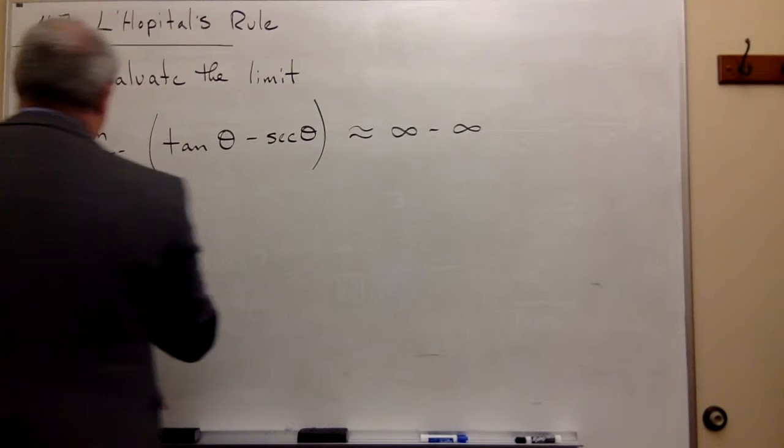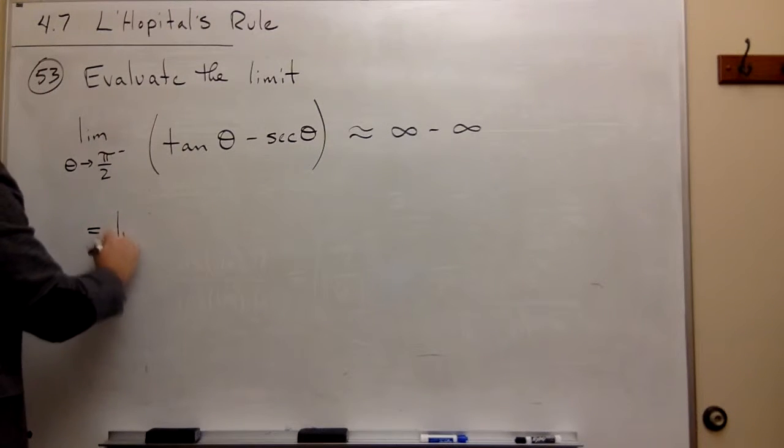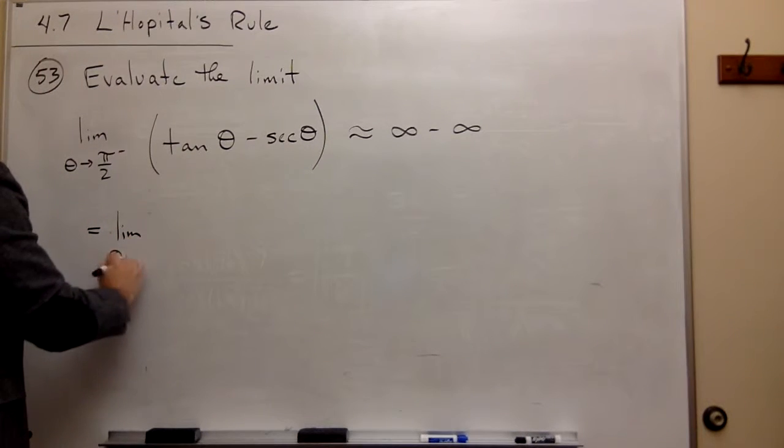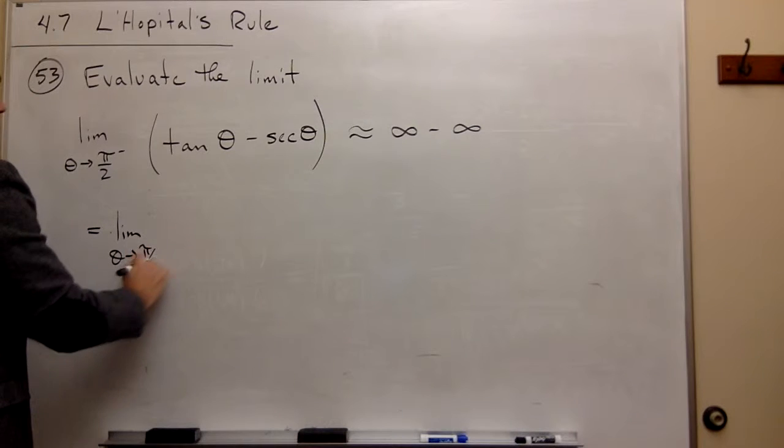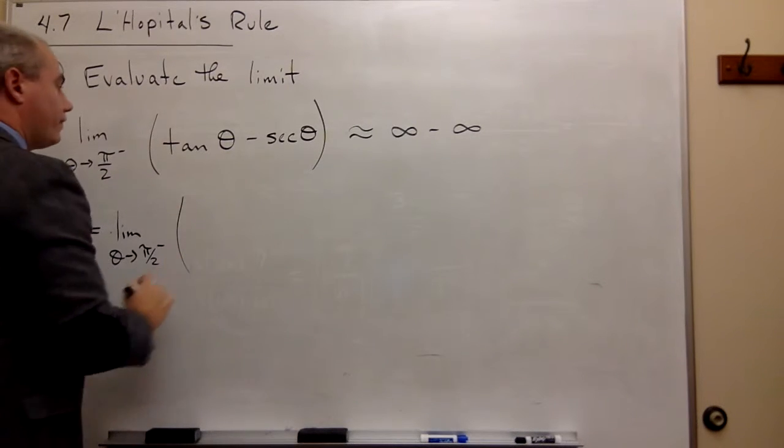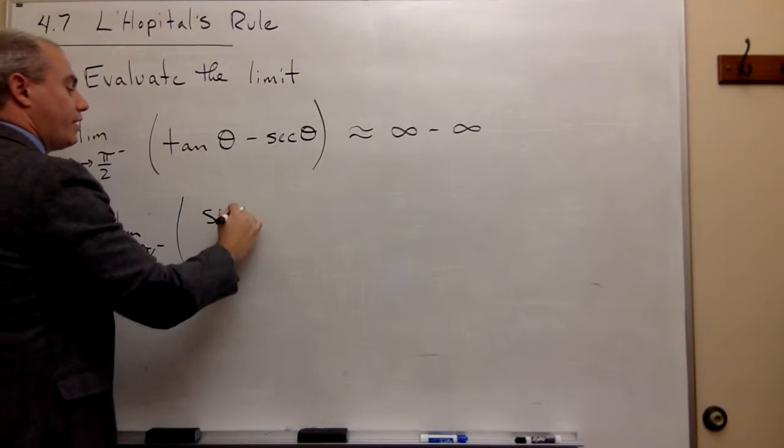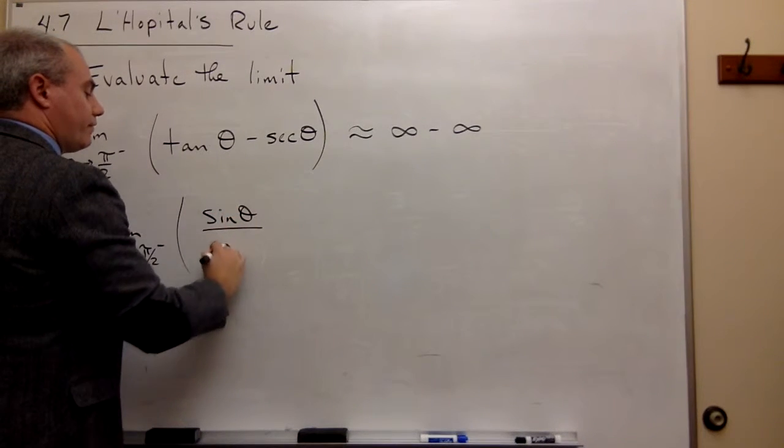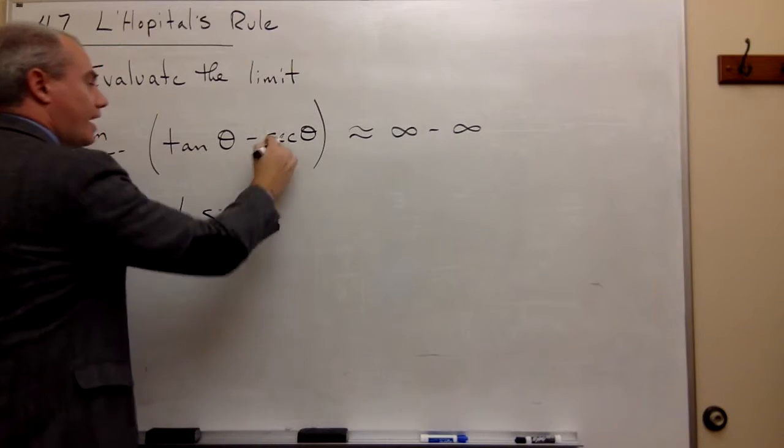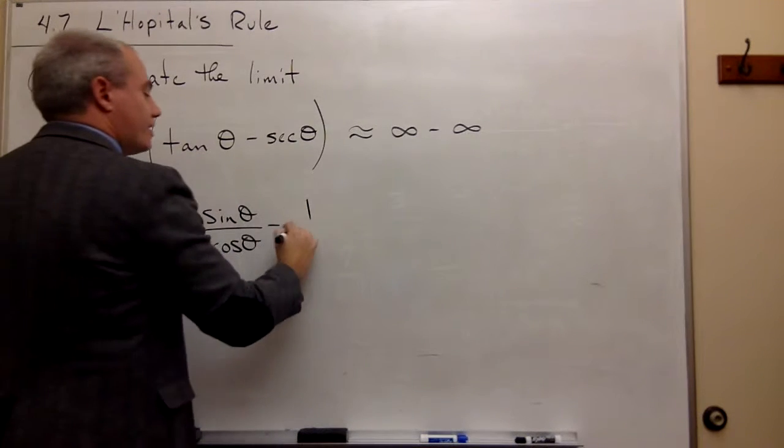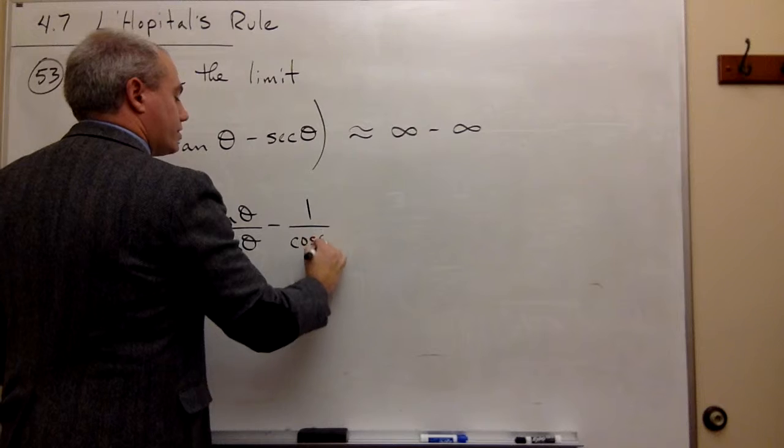So the first thing I'm going to do here is let's rewrite. This is the limit as theta goes to pi over 2 from the left of, well, tangent can be rewritten using sines and cosines. It's sine of theta over cosine of theta. And secant of theta can be rewritten as 1 over cosine of theta.